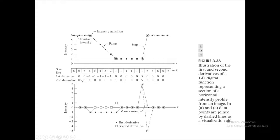Next we encounter the intensity ramp. The first-order derivative is non-zero at the onset of the ramp. At that onset point, the second derivative is also non-zero. Similarly, the second derivative is non-zero at the onset of a step as well. The second derivative is non-zero at both the onset and end of both the ramp and the step.